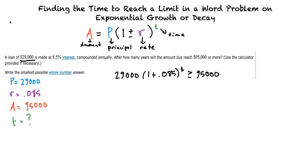Alright, so should I divide both sides by 29,000 first? Yes, we will divide both sides by 29,000, leaving us with 1.085 to the T is greater than or equal to 3.2759. Now, do you remember how to use logarithms to solve exponential equations? Yes, I learned that in solving an exponential equation by using natural logarithms. I just take the natural log of both sides so that I can bring the T down.